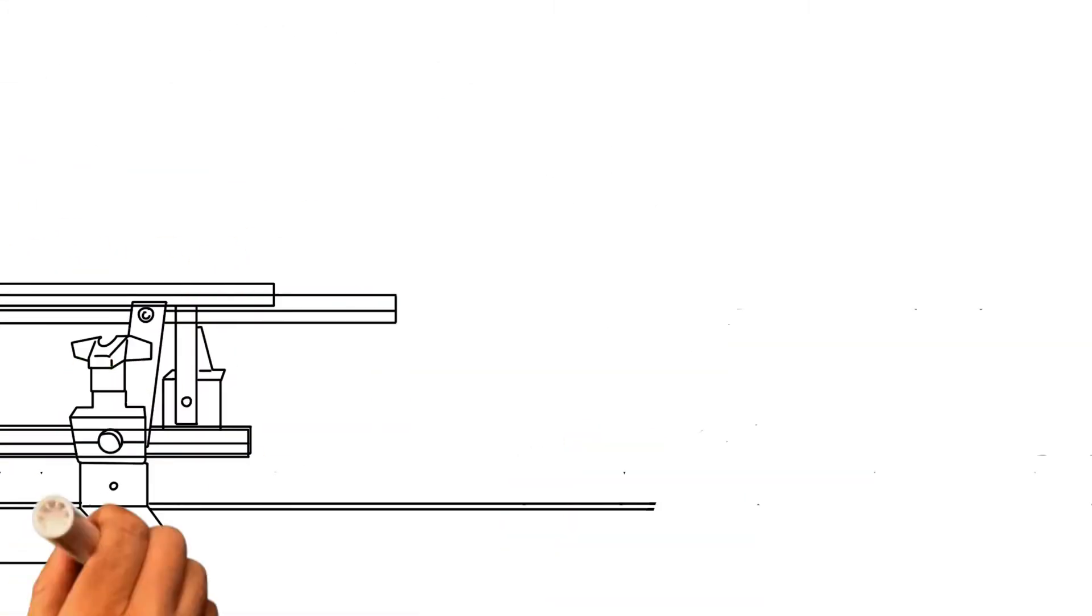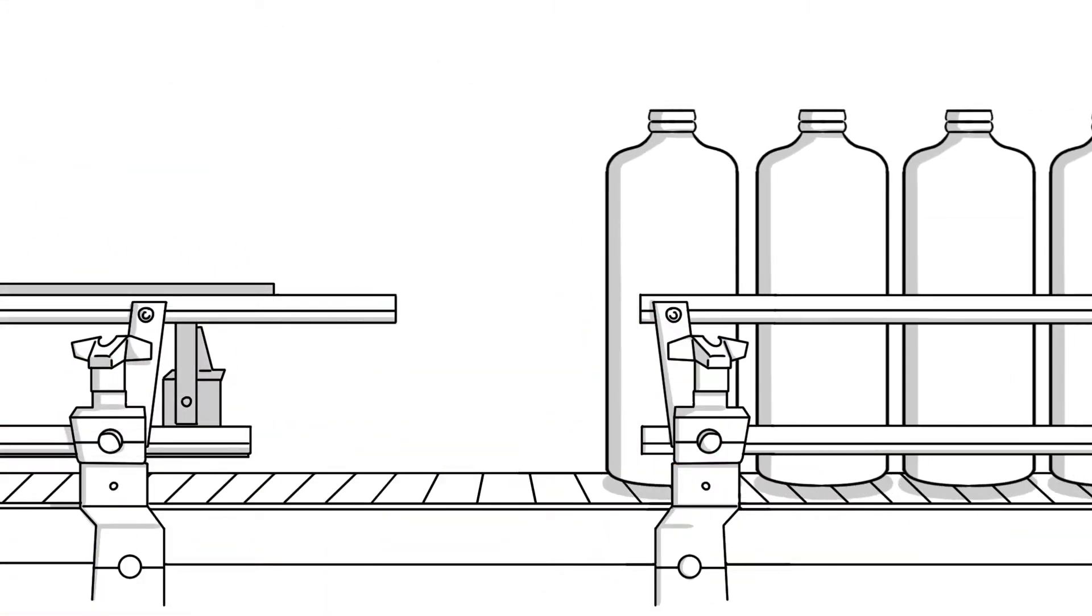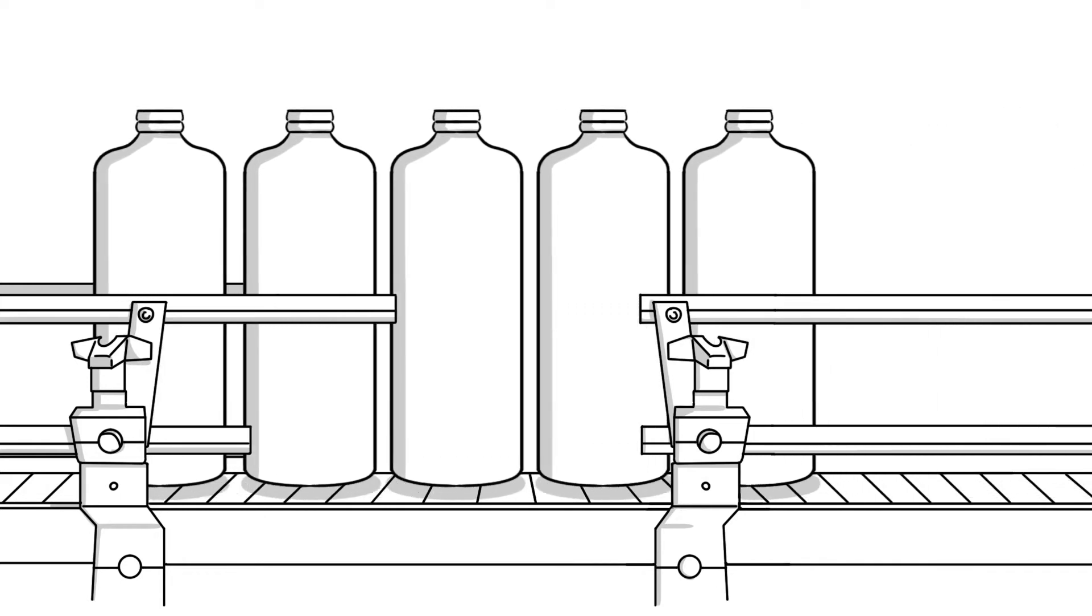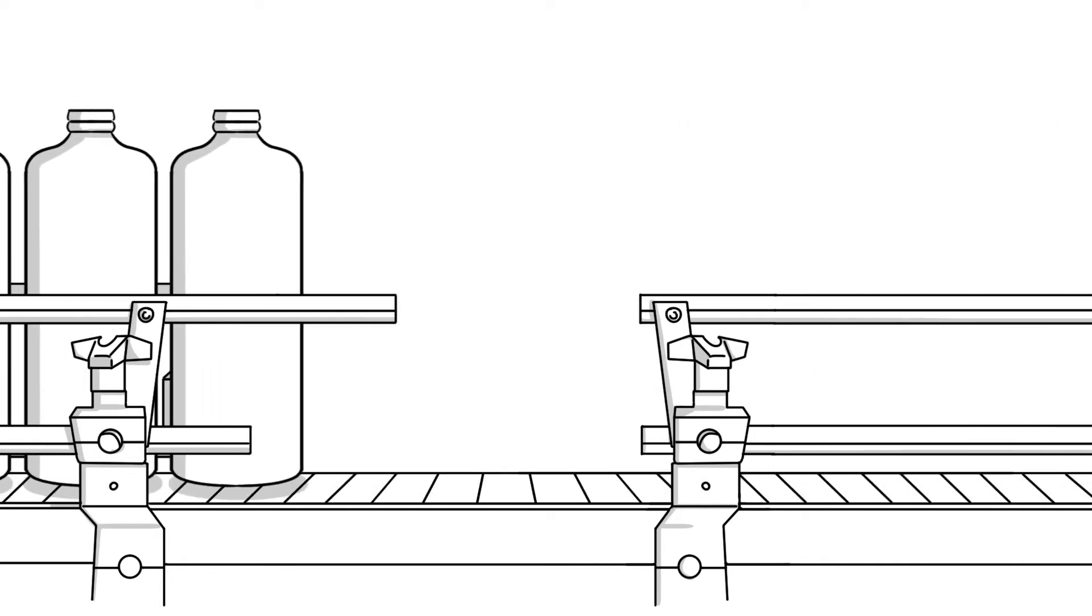Once the part is molded, the bottle will have flash removed mechanically or by hand and then finished with any other required procedure like trimming or leak detection.